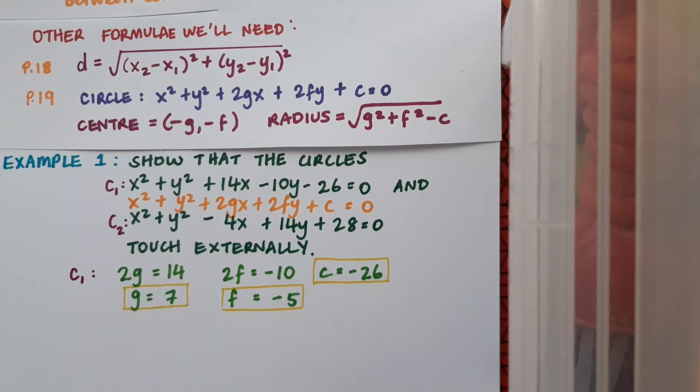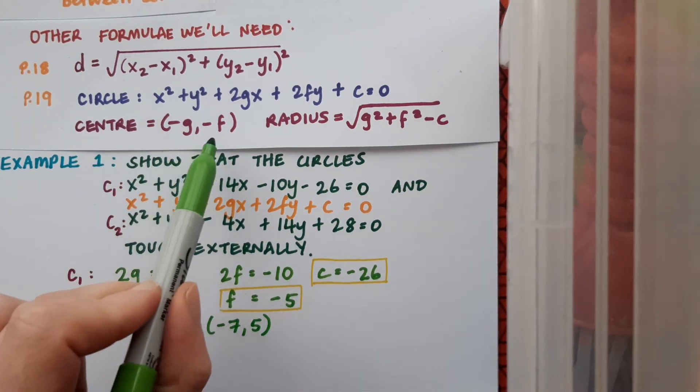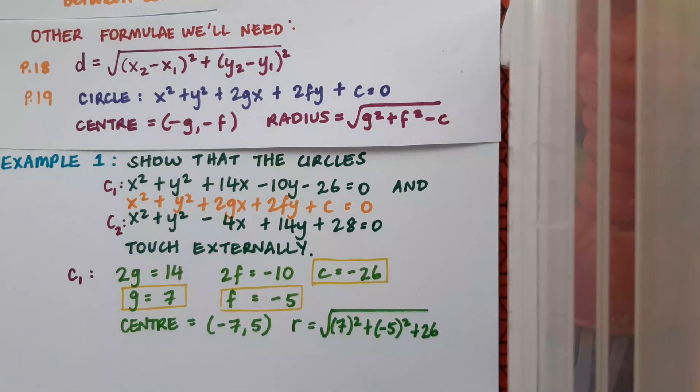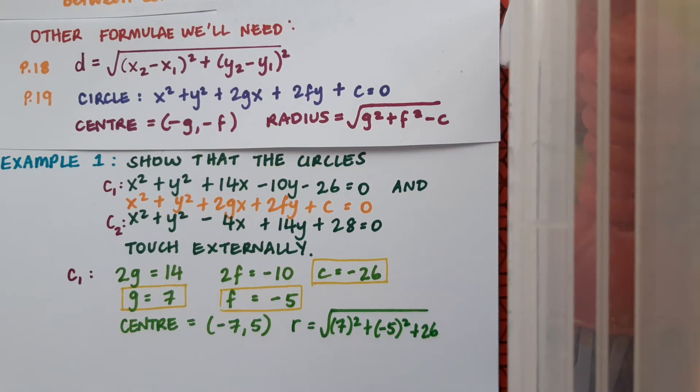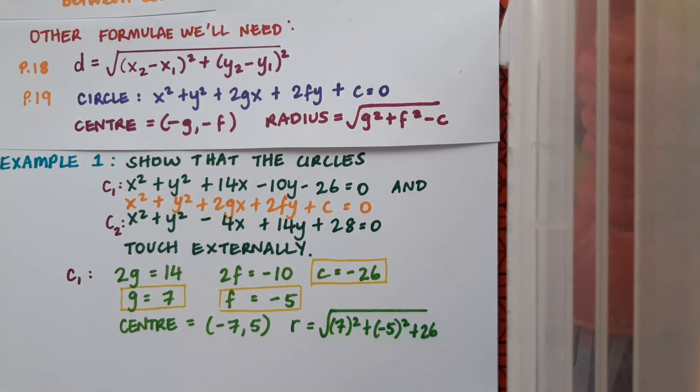So in this case centre equals minus 7,5 and I can see that that's being got there from the centre formula minus g minus f and now I'm substituting in to find my radius. Notice that in the radius formula there's a minus c but because my c is negative already it's going to be a plus in the formula and this radius comes out as 10.